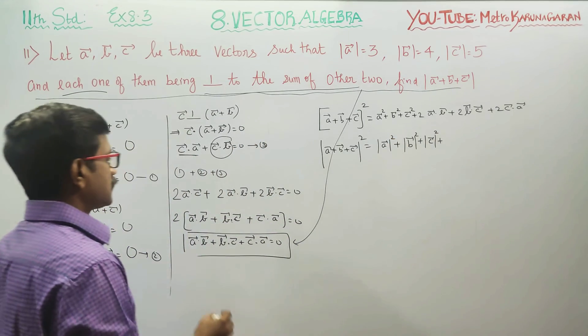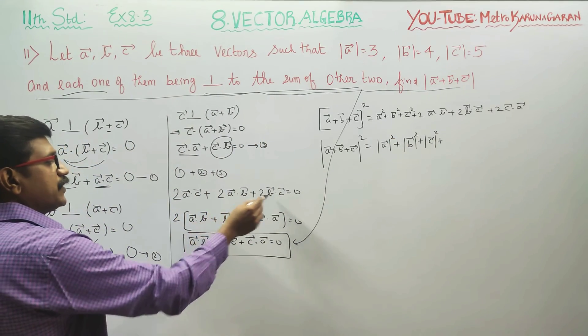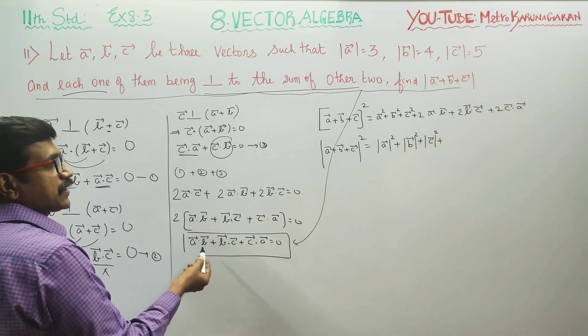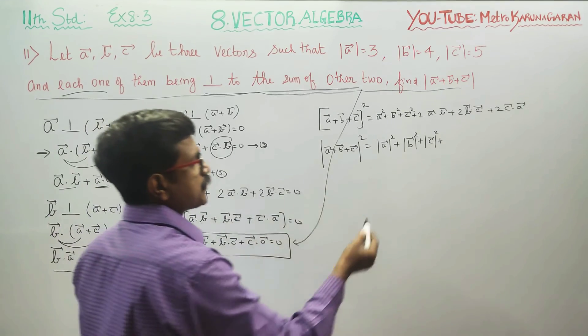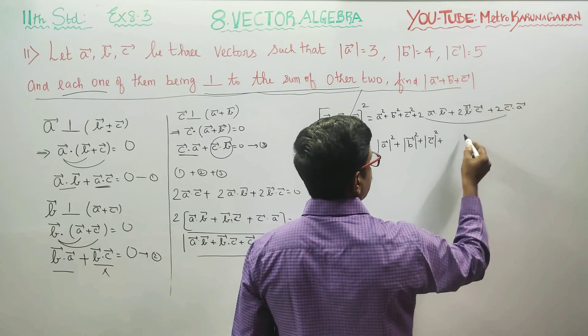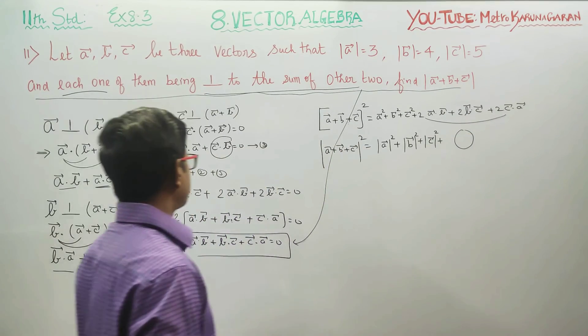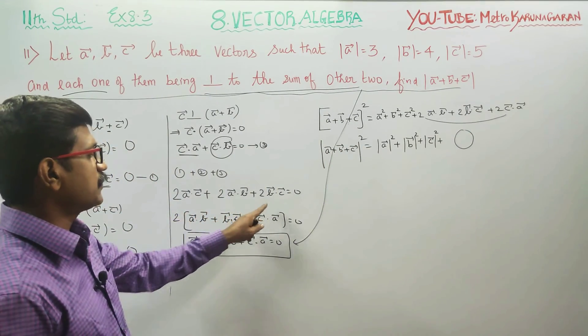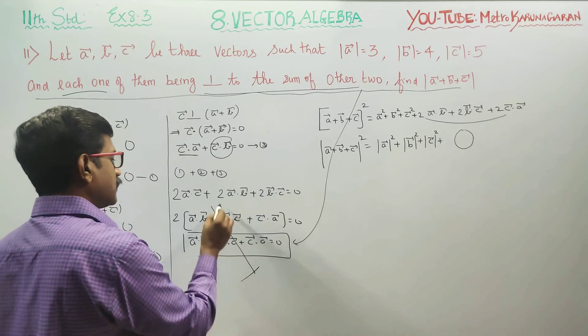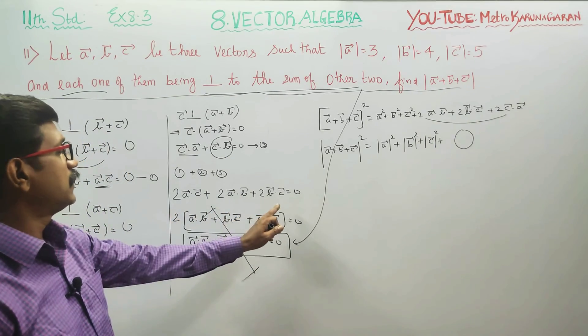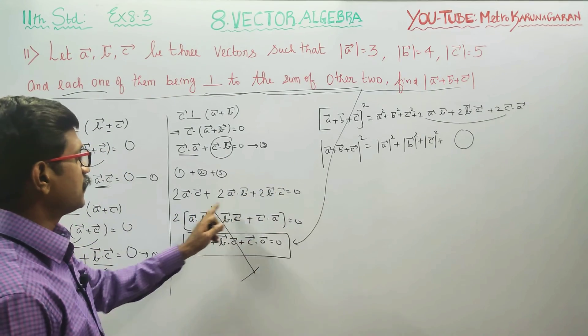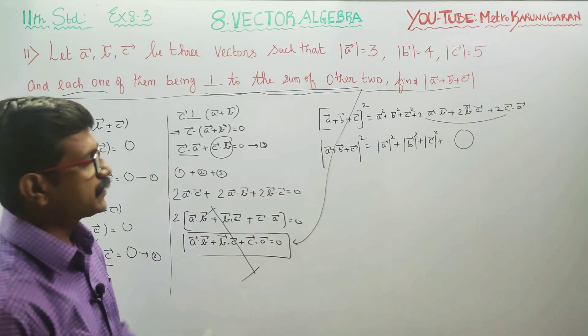2 times (A dot B plus B dot C plus C dot A) equals zero from our result. So 2 into (A dot C plus A dot B plus B dot C) directly becomes zero.